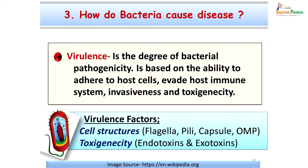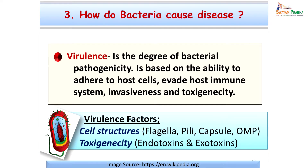Coming to the third question — how do bacteria cause disease? They cause disease if they have virulence factors. The virulence of a bacterium is a degree of its pathogenicity, based on the ability to adhere to host cells, evade the human immune attack, invade, and produce toxins. The more virulence factors a bacterium has, the more pathogenic it will be. Virulence factors can be present on the cell wall, flagella, pili, capsule, and outer membrane proteins. Bacteria can also produce toxins — exotoxins, which are released into the surrounding tissue, and endotoxins, which are released when the bacteria die.